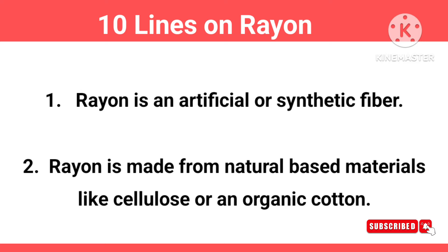Rayon is an artificial or synthetic fiber. Rayon is made from natural based materials like cellulose or organic cotton.